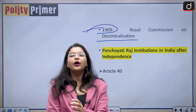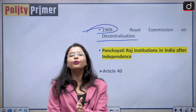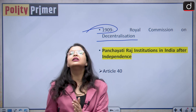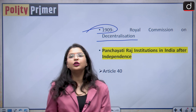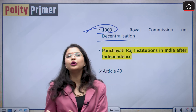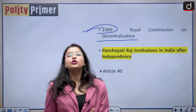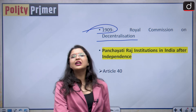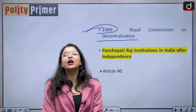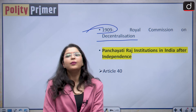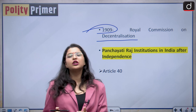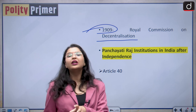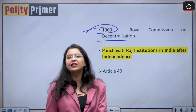This commission found that the local self-government institutions are good but they suffer from certain lacunas. It said that you need to give them more autonomy. This was all suggested by the Royal Commission on Decentralization and was accepted as well. But there was no functioning of the local self-government institutions in India — they were not institutionalized and did not have a separate status.